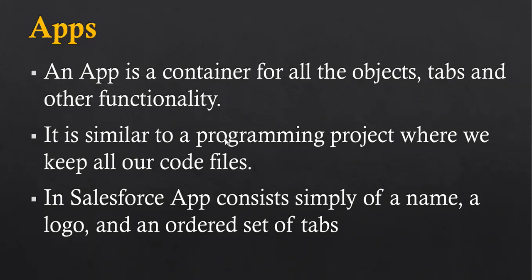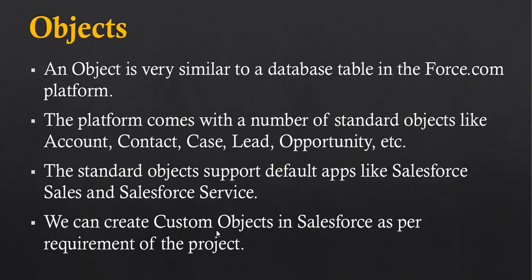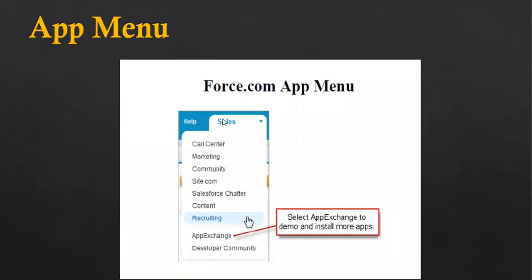It is similar to a programming project where we keep all our code files. In Salesforce, an app consists simply of a name, a logo and an ordered set of tabs. In Salesforce Classic there is a menu from where you can select a particular app, while in Salesforce Lightning we have the app launcher to pick a particular app.